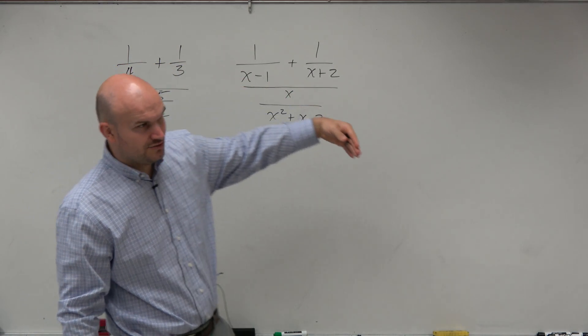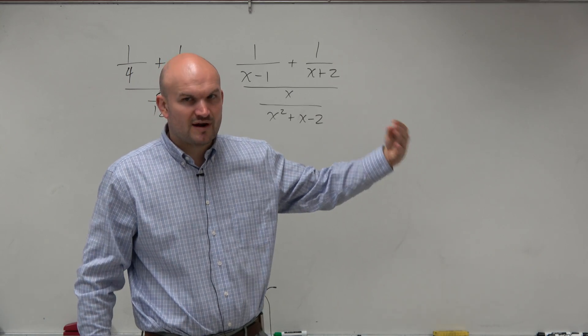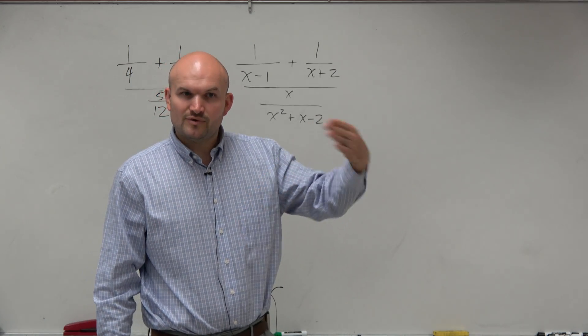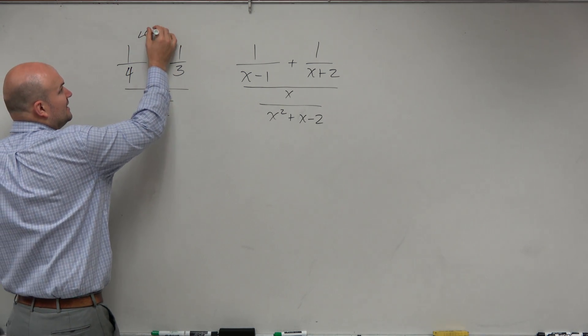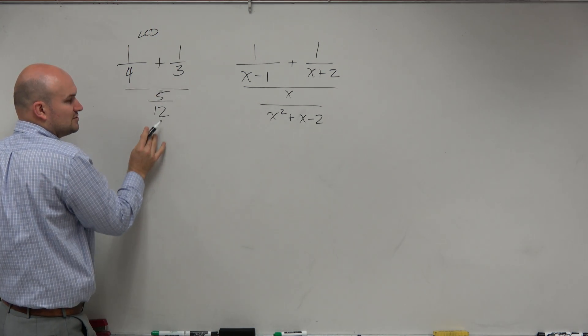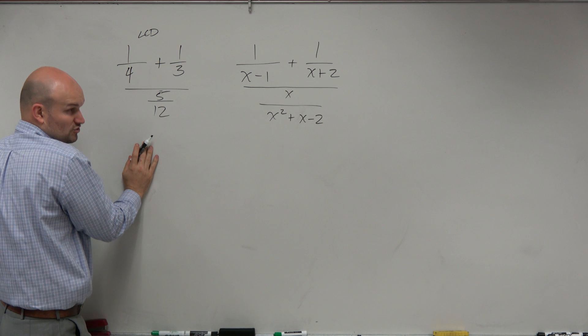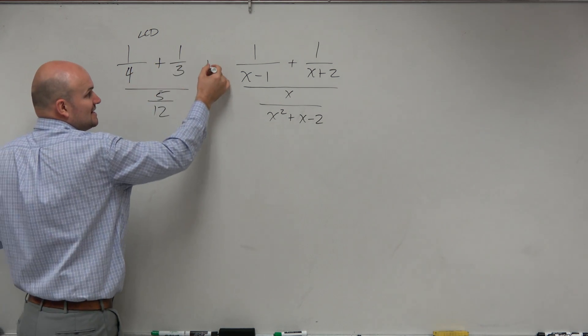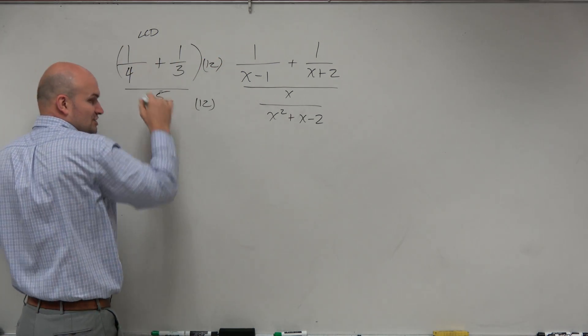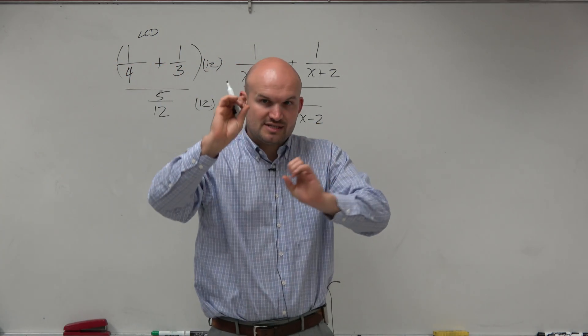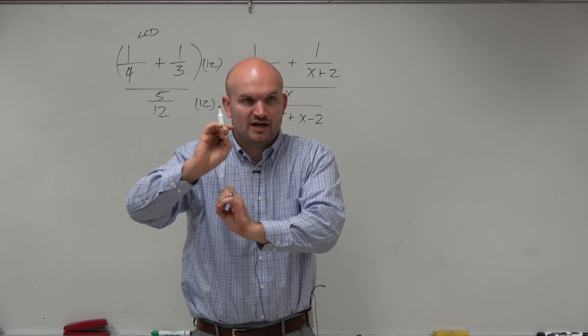One of the other routes that we talked about in algebra 1 is, why even deal with doing fraction operations? Just get rid of the fractions. So another way you could do is say, well, what is the LCD of 4, 3, and 12? 12. So what happens is, as long as you're multiplying the top and the bottom times the same value, you're not changing the fraction, right? As long as you do the same in the top and the bottom, you're not changing the value of the fraction.